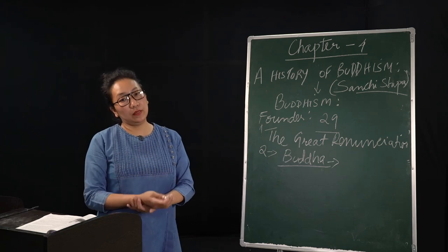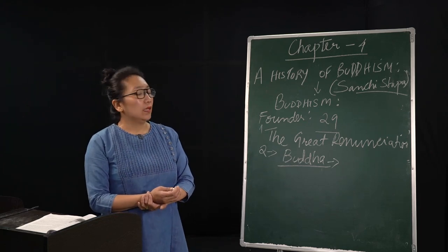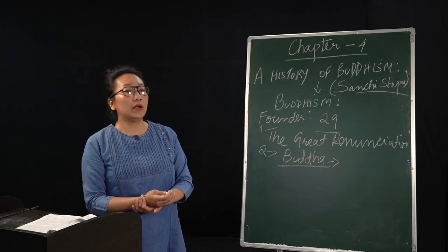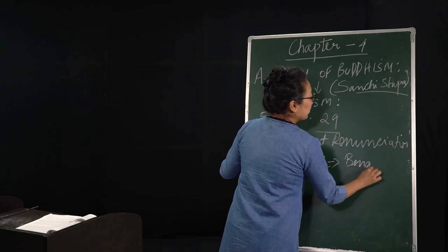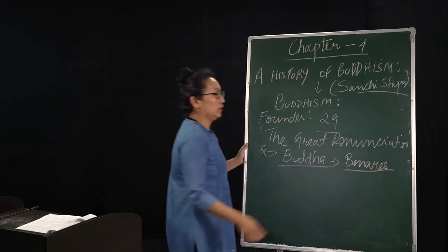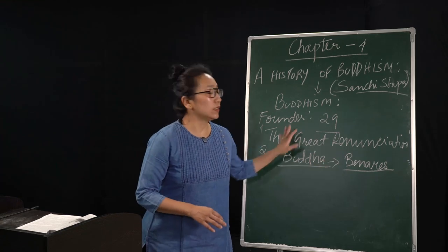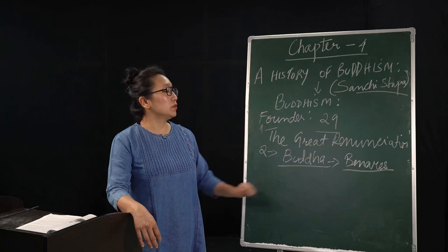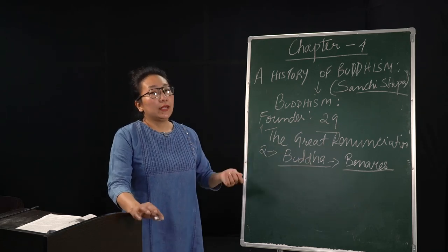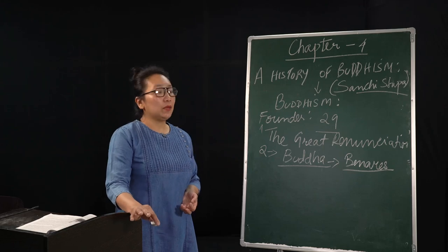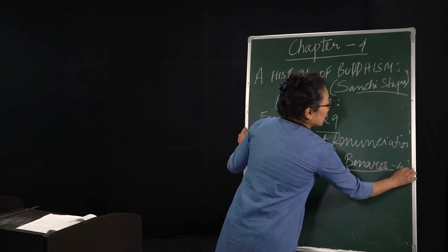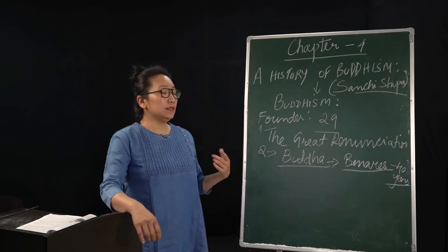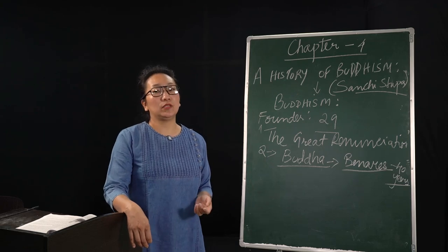He gave his first sermon in a deer park near Benares, in Bihar again. He was from Bihar. He was born in a place called Lumbini in Bihar. So his initial years of searching the truth was centered around Bihar only. From that time onwards, for the next 40 years, Gautama continued to preach his new ideals and religion till he died at the age of 80.